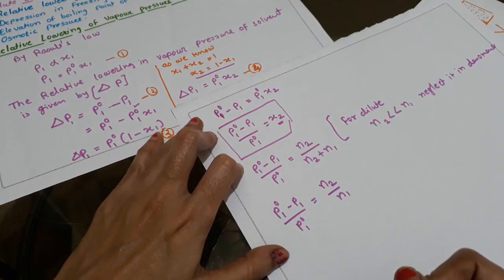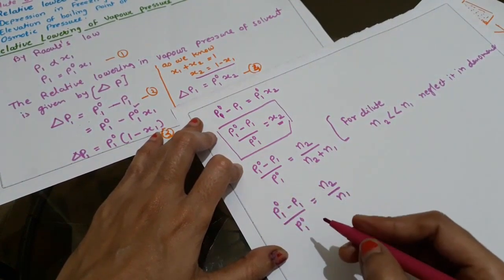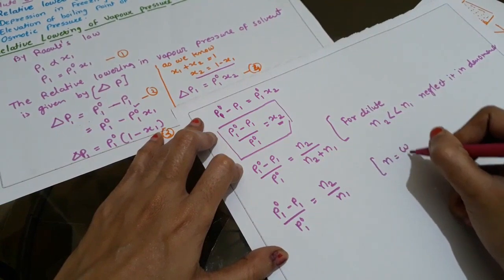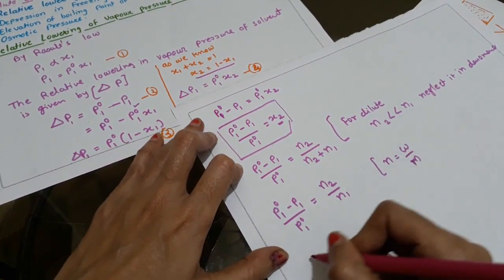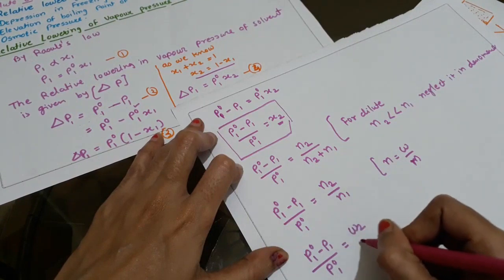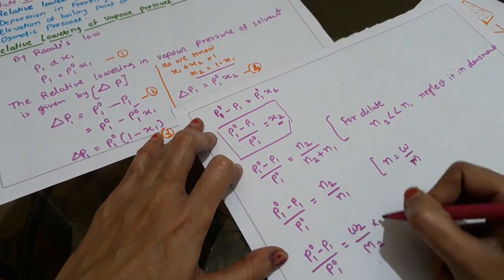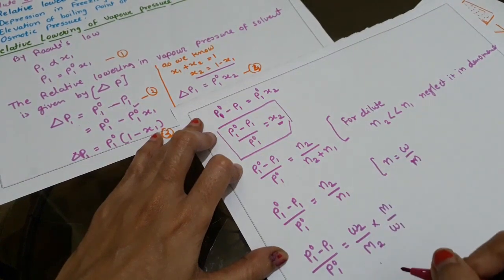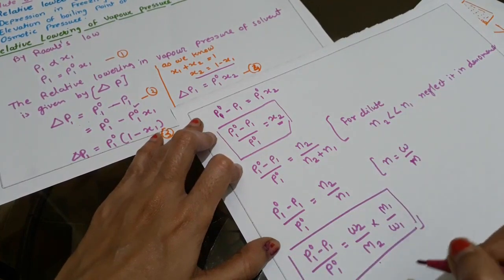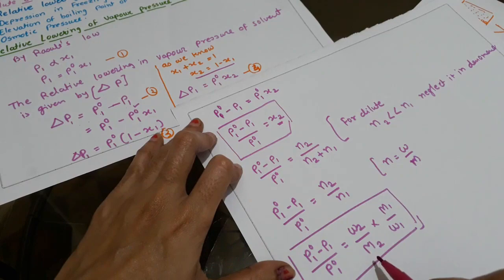The number of moles is equal to given mass divided by molar mass. So substituting, (P⁰₁ minus P1) divided by P⁰₁ equals (w2 / M2) divided by (w1 / M1). This is the equation for relative lowering of vapor pressure, and this formula is used to calculate the molar mass of the solute.